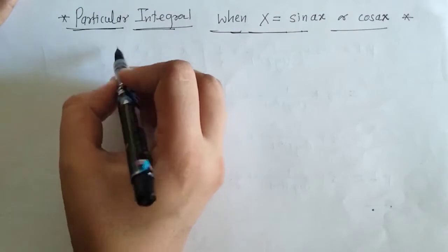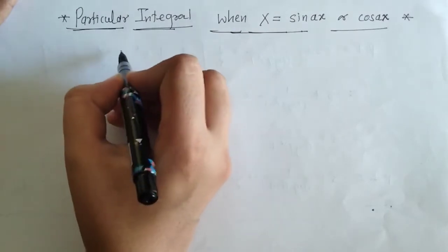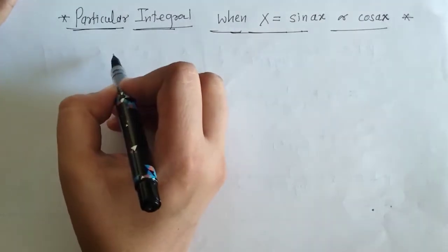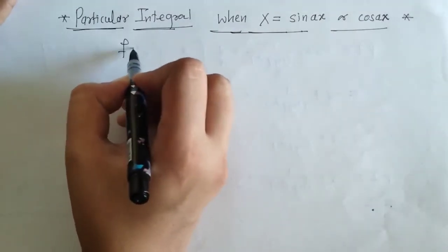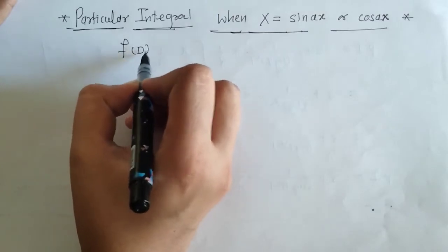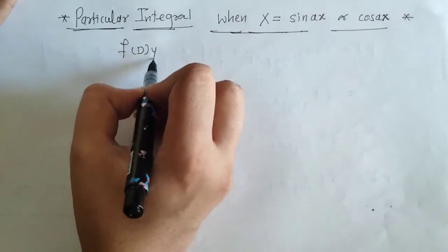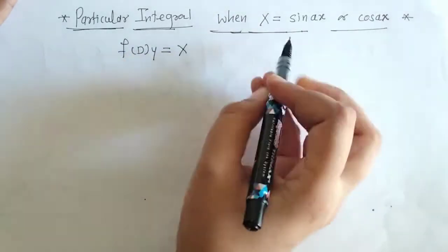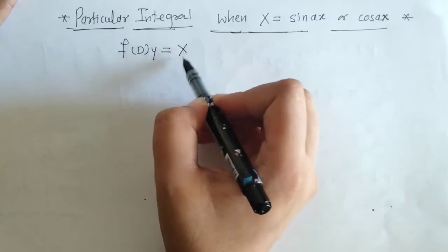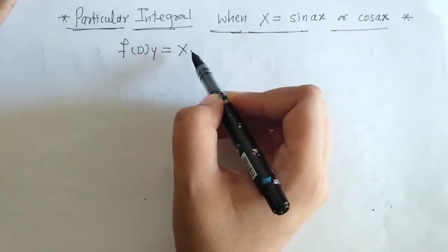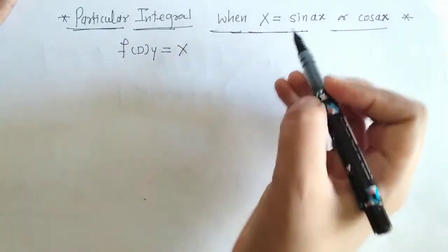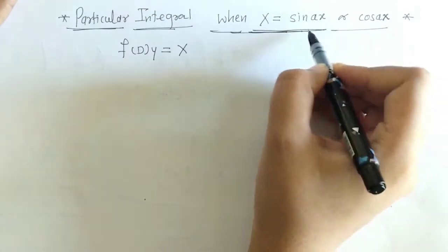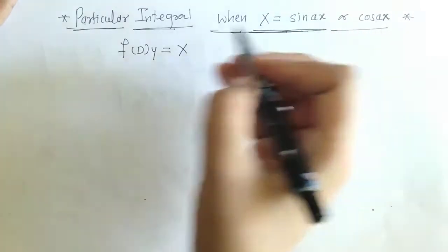We know that we have this linear differential equation with constant coefficients in the form f(D)y = X, where X is a function of x or may be a constant. Here we have taken X as sin or cos.